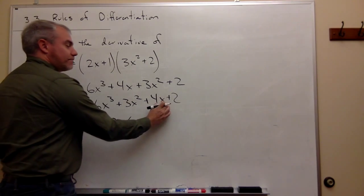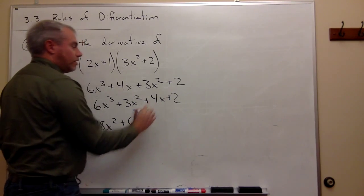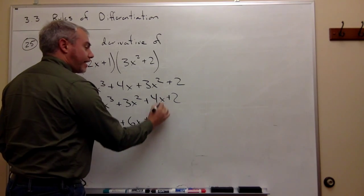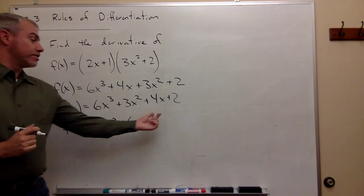Here, I bring down the 1, 4 times 1 is 4, times x to the 0, in other words, times 1.